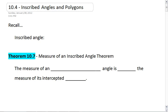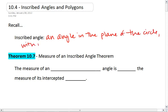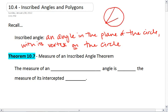Section 10.4, Inscribed Angles and Polygons. Recall an inscribed angle is an angle in the plane of the circle with its vertex on the circle. So instead of having our vertex at the center of the circle, we're going to put our vertex actually on the circle.